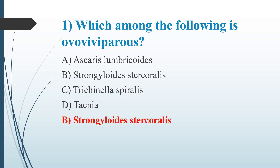What is ovoviviparity? Ovoviviparous means producing eggs that develop within the maternal body and hatch within or immediately after release from the parent. Strongyloides stercoralis is an example of ovoviviparity, and Wuchereria bancrofti is also an example.